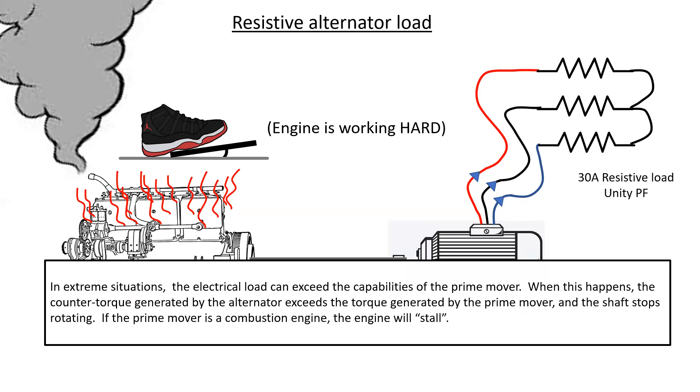In extreme situations, the electrical load can exceed the capabilities of the prime mover. And when this happens, the counter torque generated by the alternator will exceed the torque generated by the prime mover, and the shaft will stop rotating. If the prime mover is a combustion engine, the engine will simply stall.